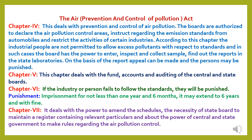Chapter 5 deals with the fund, accounts and auditing of the central and state boards. Chapter 6: if the industry or person fails to follow the standards, they will be punished with imprisonment for not less than 1 year and 6 months, which may extend to 6 years with fine. Chapter 7 deals with the power to amend the schedules, the necessity of a state board to maintain a register containing relevant particulars, and the power of central and state government to make rules regarding air pollution control.